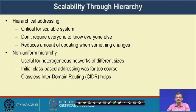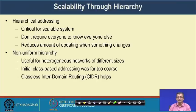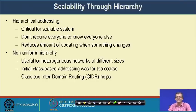Scalability through hierarchy is one way we handle this. Hierarchical addressing is critical for scalable systems — not everyone needs to know everyone else. Only the hierarchically relevant router needs to know, and this reduces the amount of updating when something changes. For example, if the number of quarters in IIT Kharagpur increases, the address need not be published to the rest of the world — only the IIT KGP post office needs to know and update it.